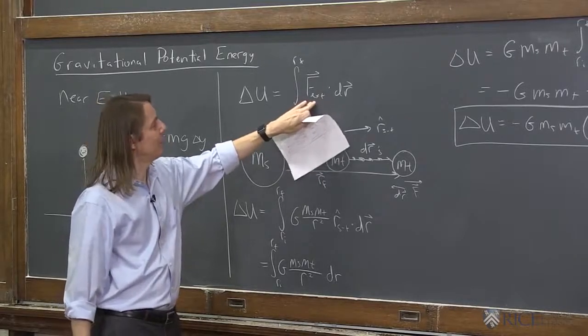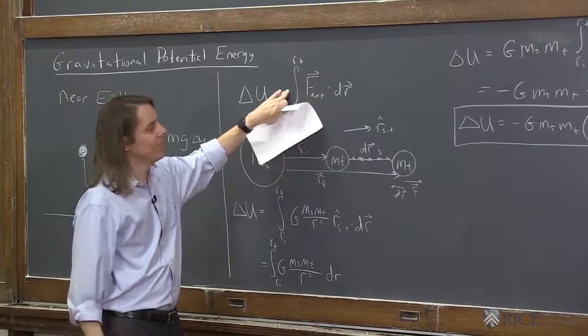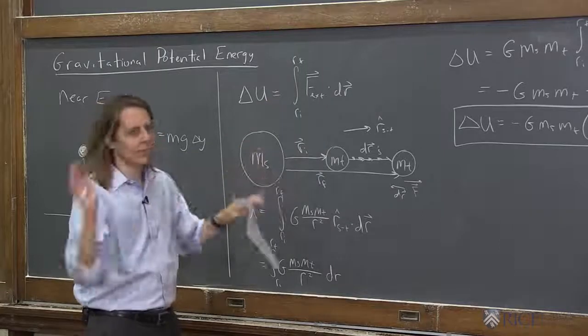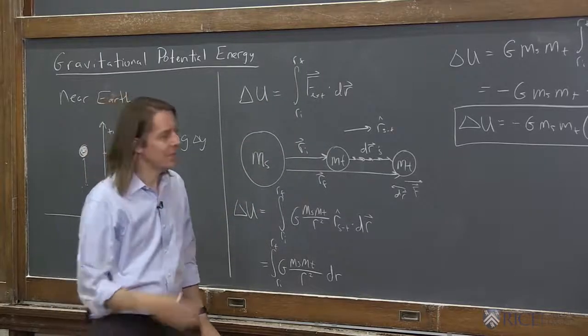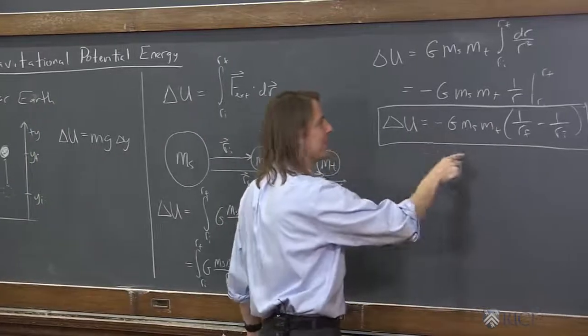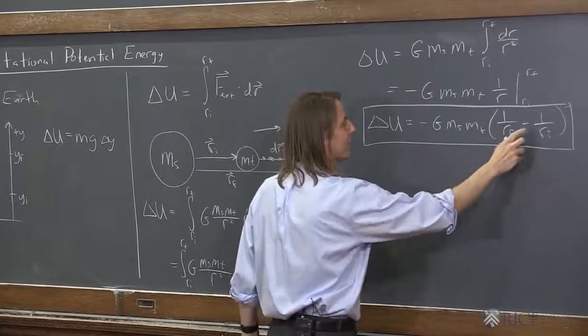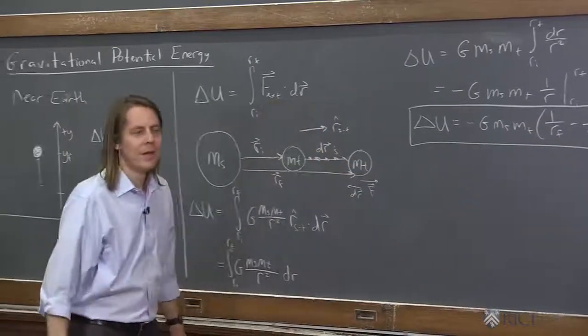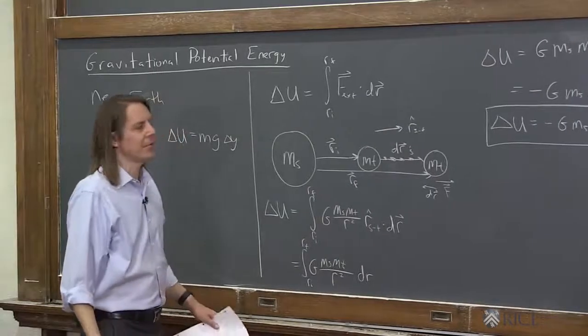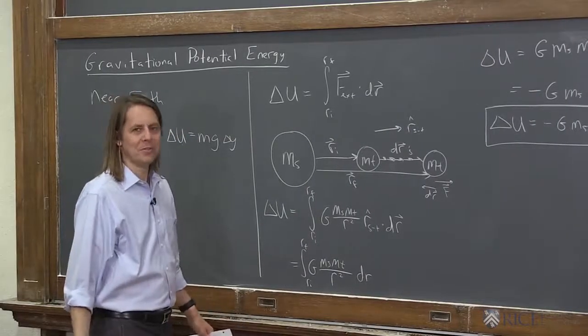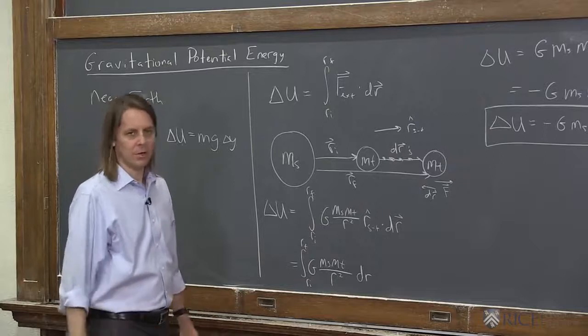You could also do the whole thing for an internal force. When you write the gravitational force, you put a negative there, and then all the negative signs cancel out again. There are four ways you could do it, and all four ways give you the exact same answer: negative sign, 1 over rf minus 1 over ri. The change in potential energy doesn't care how you think of it - whether it's external force, internal force, or which way you go.